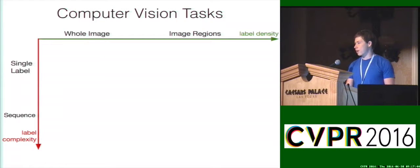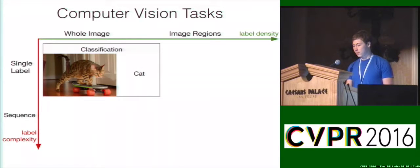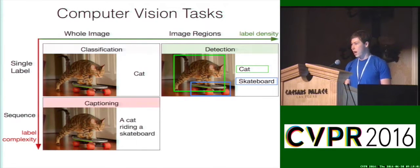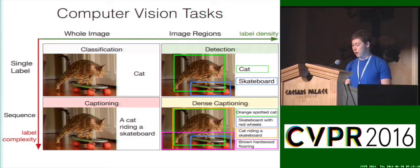Dense captioning fits in naturally with the existing landscape of computer vision tasks. Image classification is the simplest task, associating a single label with the entire image. Object detection gives denser labels, producing a set of image regions each annotated with a single label. Image captioning works on the entire image, producing a sequence of labels, but again it only refers to the entire image. Dense captioning naturally combines the label density of object detection with the label complexity of image captioning, by describing many image regions with natural language.